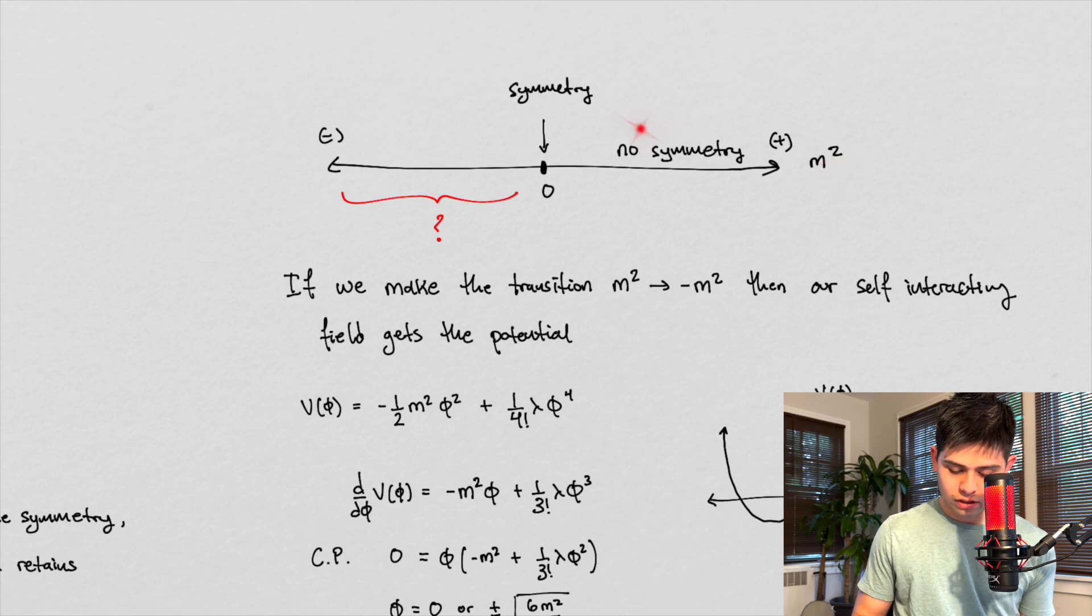This is the picture we have then, right? So we have, if we have mass and it's positive, then we have no symmetry. If we have, if we don't have mass, i.e. the mass of our field is zero, then we have symmetry. What should we make then of the regime where the mass squared term is negative, right? This is an interesting case, and let's investigate this now.